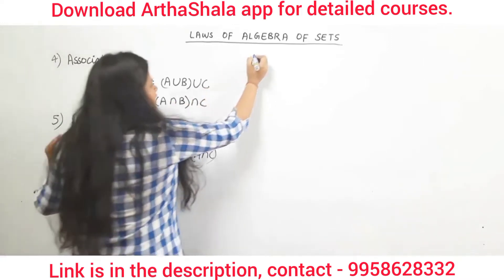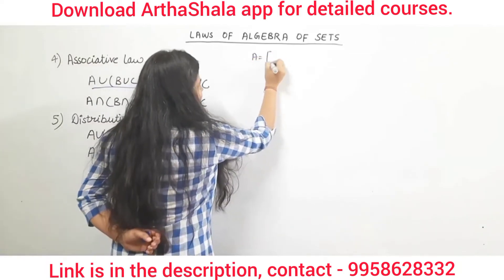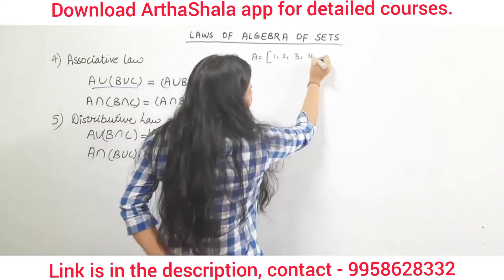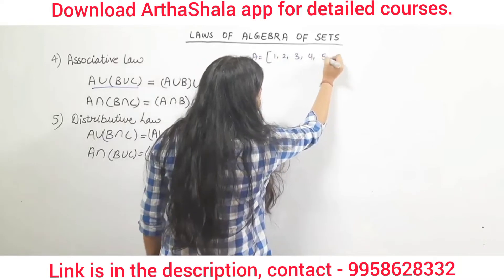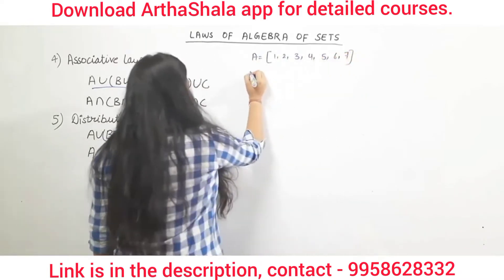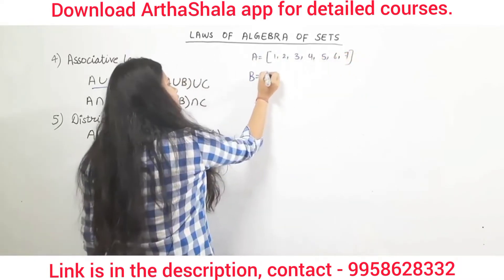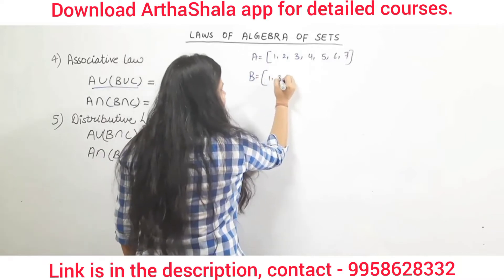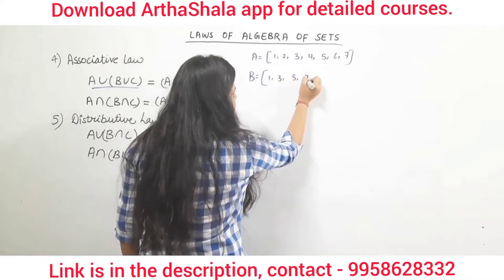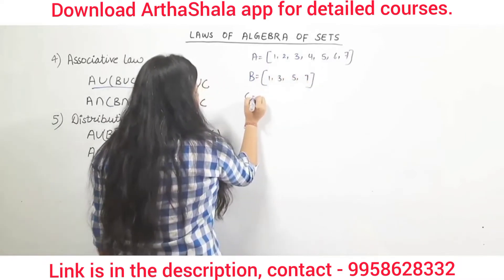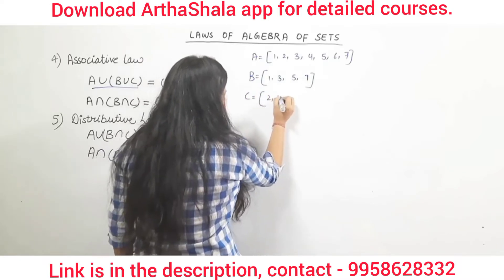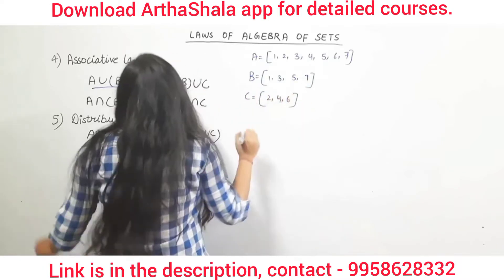Let's say A = {1, 2, 3, 4, 5, 6, 7}, B = {1, 3, 5, 6, 7}, and C = {2, 4, 6}. The associative law says that if we have three sets and want to perform union or intersection on them, the grouping does not matter. Whether we compute A union (B union C) or (A union B) union C, the answer is always the same.